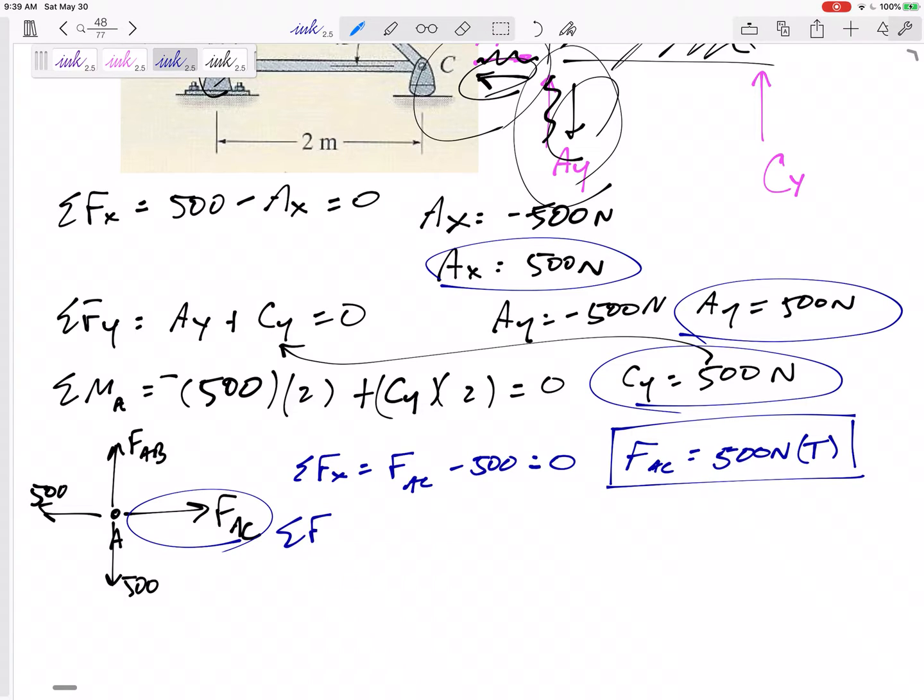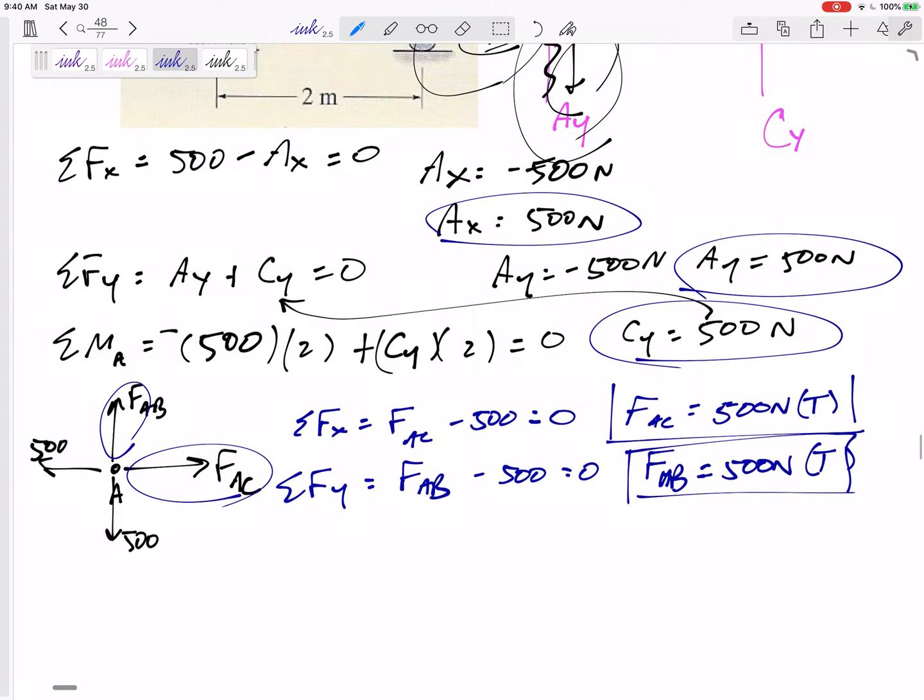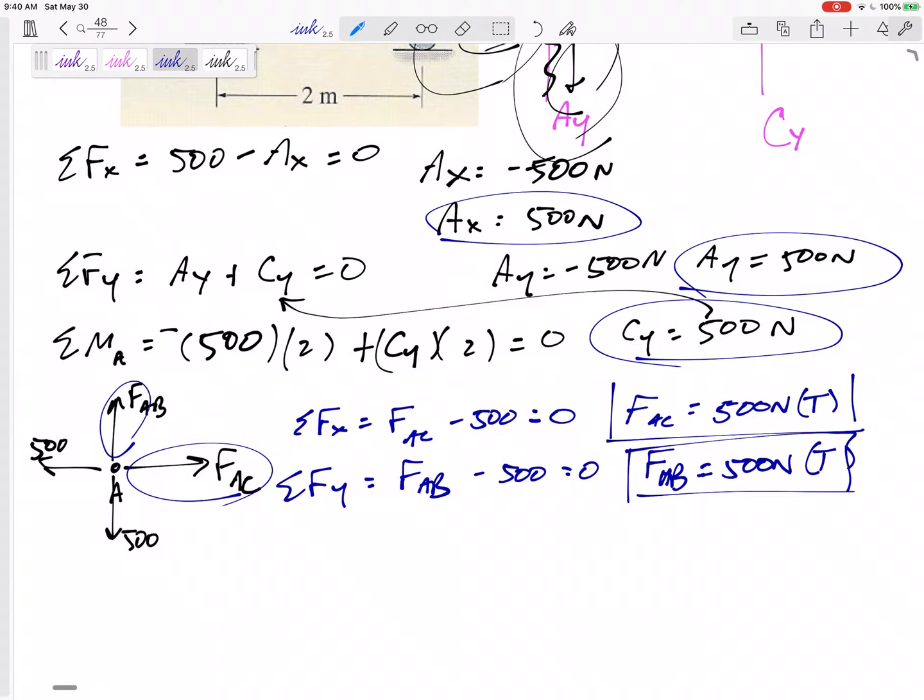Now I can sum the forces in Y. Sum of the force in Y, FAB minus 500 equals zero, FAB also 500. The math came out positive, which means you guessed correctly. I guessed tension, so this is tension.